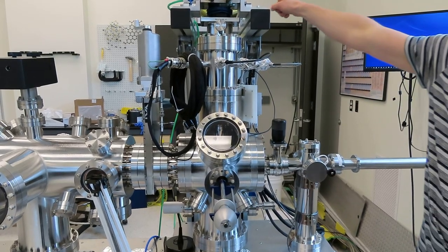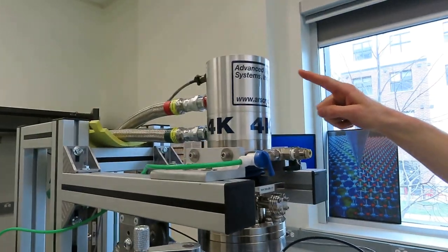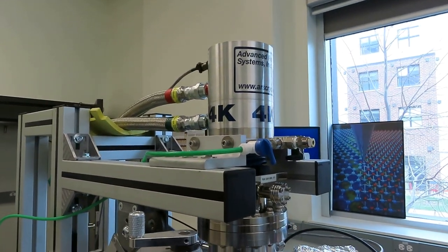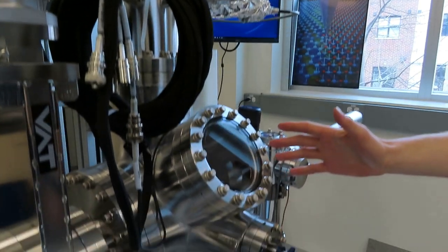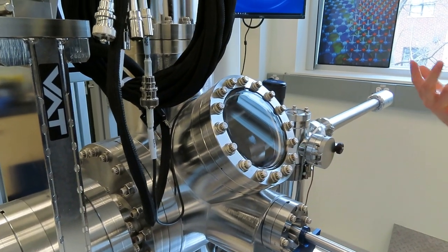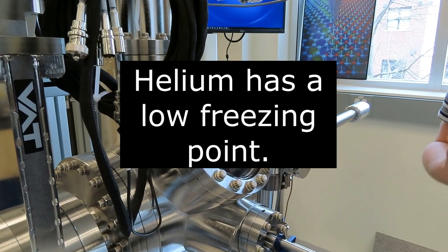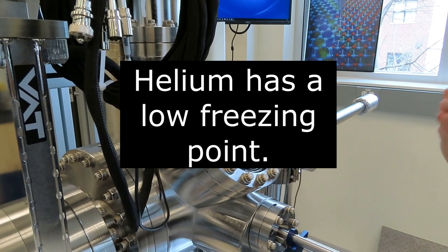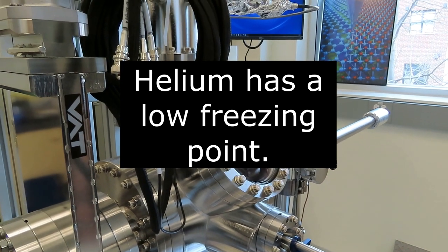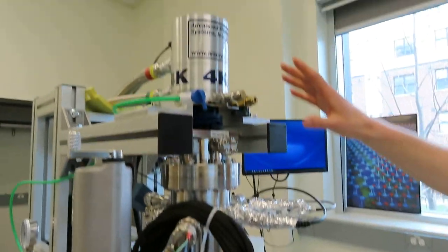What we do is we cycle helium through this line here. It comes into the cryostat and then down into the main body of the STM, and we can get the helium down to on the order of 8 Kelvin. It has to be helium instead of some other substance because helium has a very low freezing point.